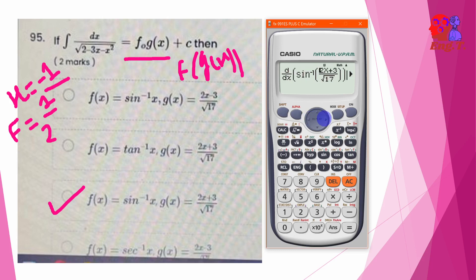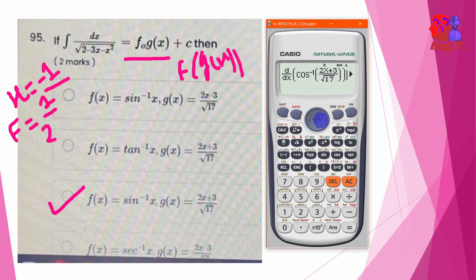1 by cosine inverse type — so basic inverse x, cosine inverse one by x type. This is correct. Cosine inverse and 2x minus 3 — this answer is correct. 1 by 2x minus 3, root 17.